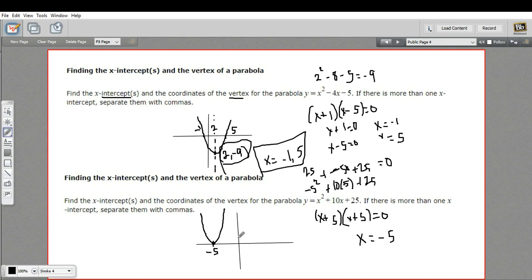So the coordinates of our vertex are negative 5, 0. And our x-intercept is x equals negative 5. So that is how to find the x-intercepts and the coordinates of the vertex from an equation of a parabola.